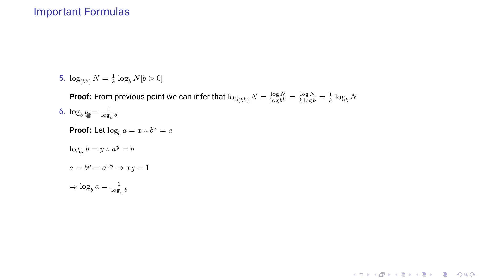The sixth important formula: log of a with base b equals 1 divided by log of b with base a. Let log of a base b equal x, so b^x equals a. Let log of b base a equal y, so a^y equals b. Substituting, a equals b^x equals (a^y)^x equals a^(xy), so xy equals 1. Therefore log of a with base b equals 1 divided by log of b with base a.